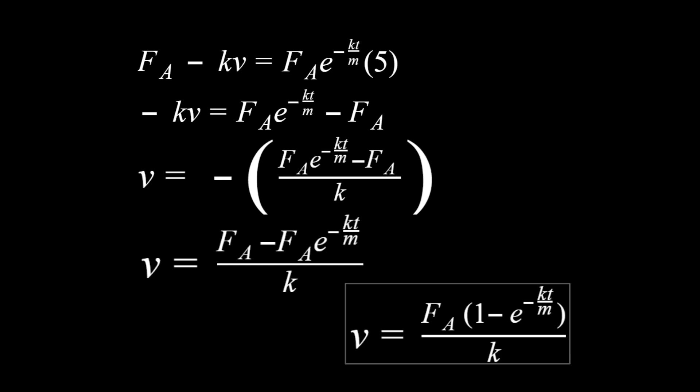That is our answer — not a single number but a function: given a specific time, you plug in the knowns and get the velocity. That earns five points. With practice this becomes straightforward. Remember: you earned four points just for the free body diagram, and if you get lost in the derivation, it's worth considering moving on to pick up points on easier problems rather than getting stuck in the weeds.